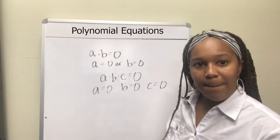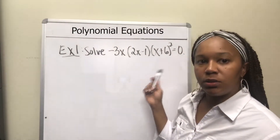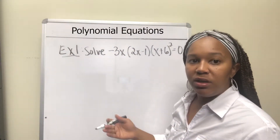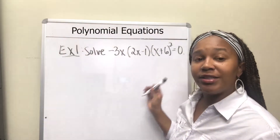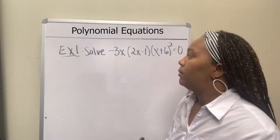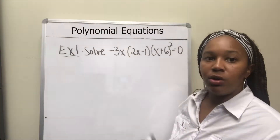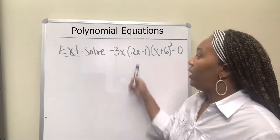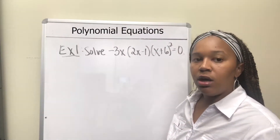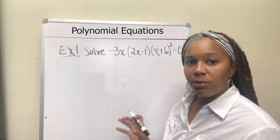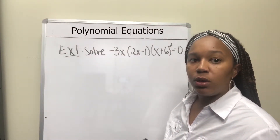Let's jump in and look at some examples. For example one, we want to solve negative 3x times (2x minus 1) times (x plus 6) squared equals zero. This is a polynomial equation — if you were to multiply it out there are four x's, so this would be a fourth degree polynomial. The polynomial is already factored, which makes our job a little easier. We have three things that multiply to give you zero: negative 3x, 2x minus 1, and (x plus 6) squared. Since those three things multiply to give zero, one of them has to be zero.